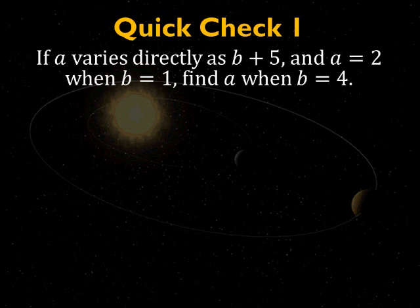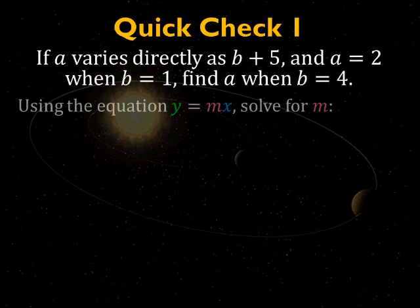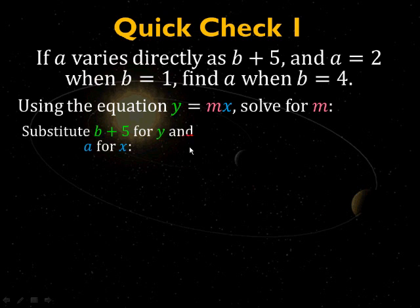If a varies directly as b plus 5, and a equals 2 when b equals 1, find a when b equals 4. So, this one's a little more complicated. You're going to use the same equation solving for m, but this time, instead of using a single variable for y, you're going to plug the entire expression b plus 5 in for y, and you'll plug in a for x.